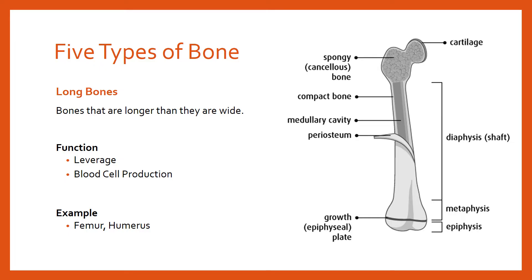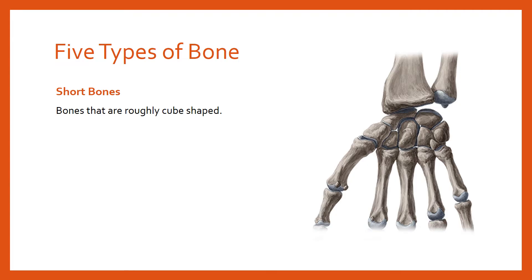The second type of bone is short bones. Short bones are roughly cube-shaped — not longer in any particular axis like a long bone. Their main function is weight-bearing. We find them particularly in the ankles and wrists. If you think about what your ankles go through during walking, running, and jumping, the amount of weight borne by those bones is significant, so they need to be compact and strong.